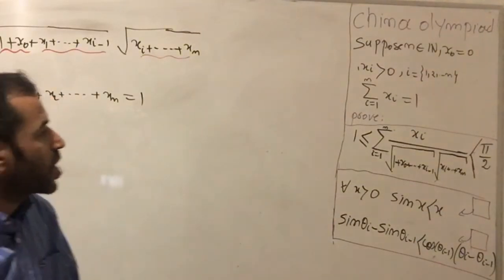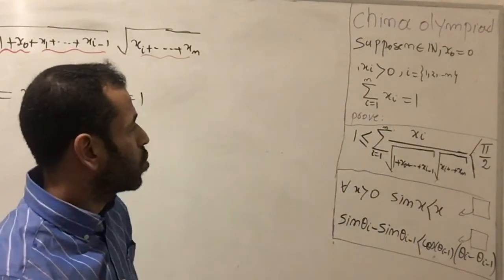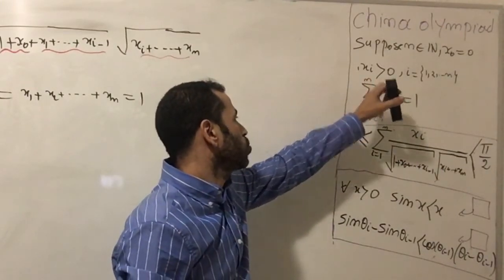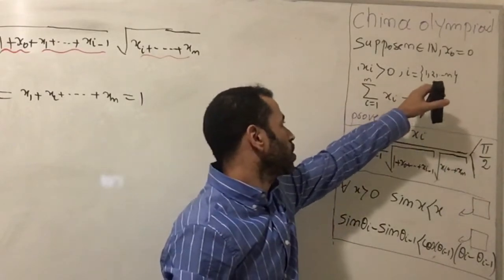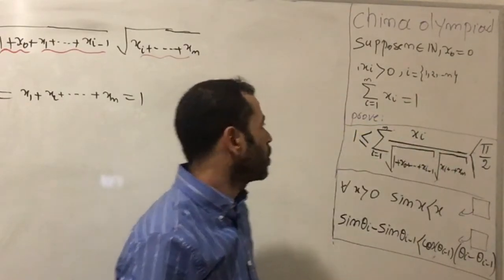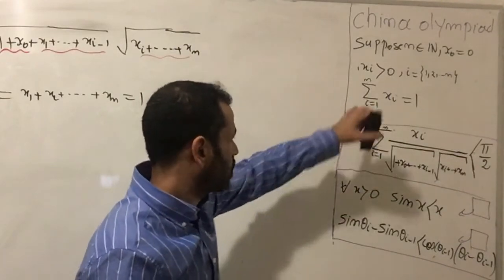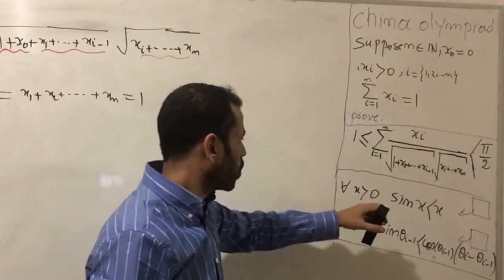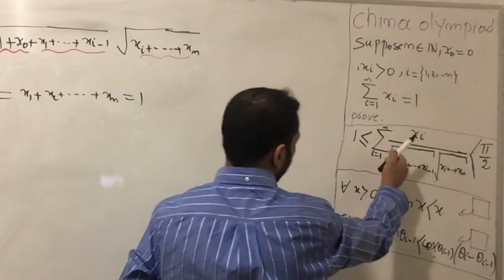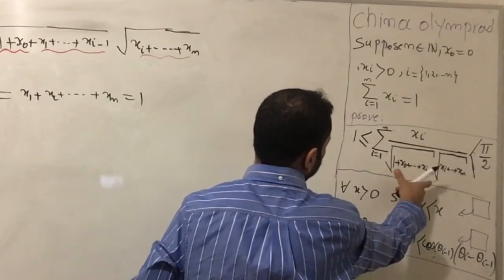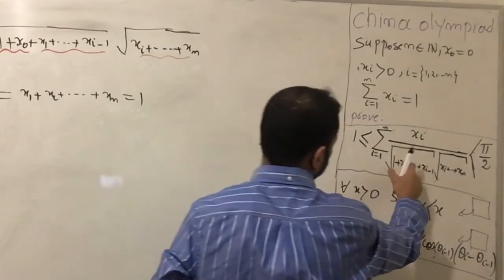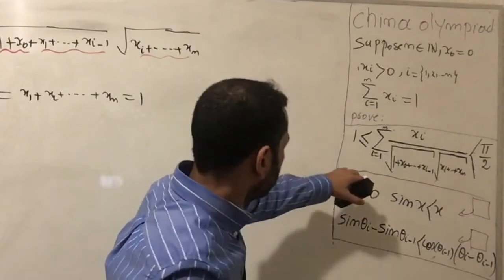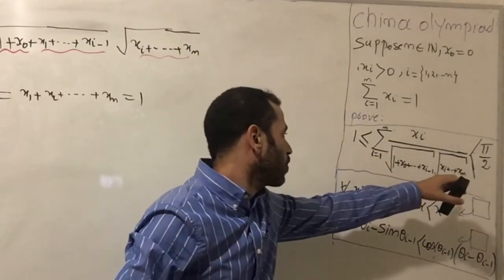So suppose n is a natural number, x sub 0 equal to 0, we have xᵢ strictly greater than 0 for i going from 1 through n, and we have the sum of xᵢ as i goes from 1 to n equal to 1. The question we are going to prove is that this big sum of xᵢ over the product of two sums is between 1 and π/2 — that is, greater than or equal to 1 and strictly less than π/2.